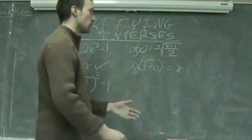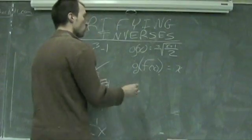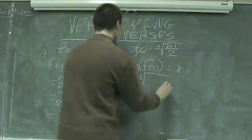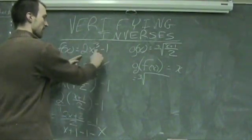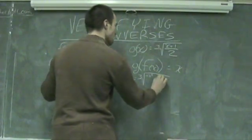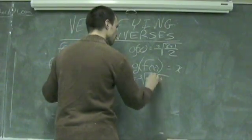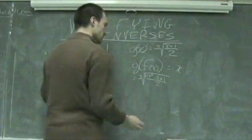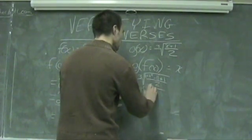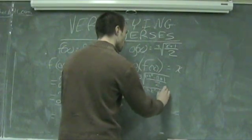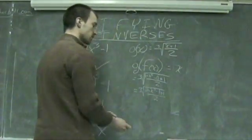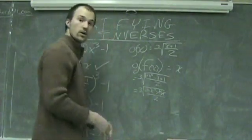Now checking g of f of x and seeing whether or not that is equal to x, we're going to have the cube root. This is going to be equal to the cube root of x, which is now f of x, this whole function, so 2 times x cubed minus 1, now plus 1, all divided by 2. Taking care of this, I now still have the cube root of 2 times x cubed minus 1 plus 1, still all under the radical, all divided by 2. So my negative 1 and my positive 1 are going to cancel out.